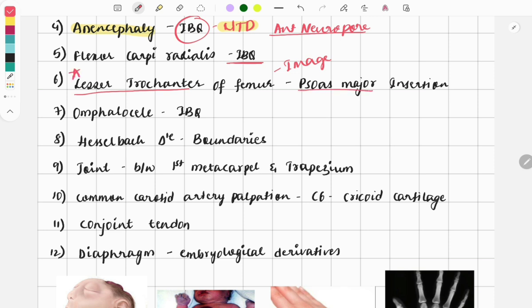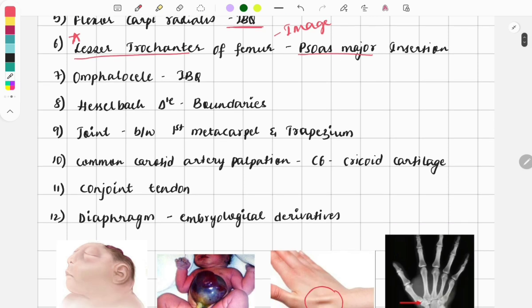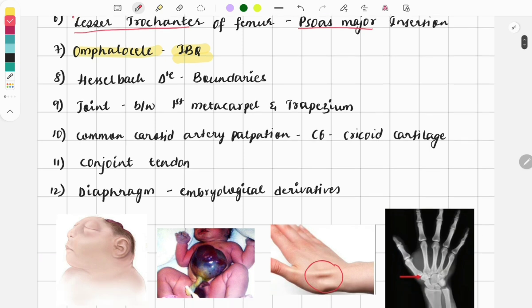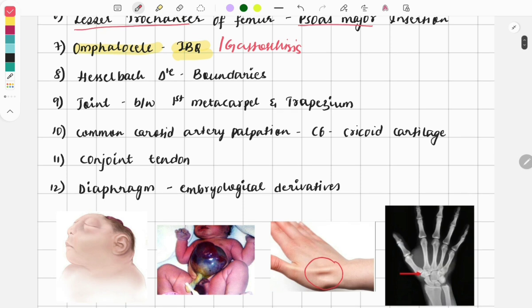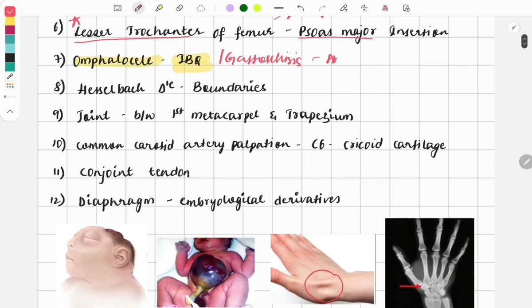The next topic: omphalocele. An image was given and directly asked what is the following. Along with that, gastroschisis is also a very important topic. Omphalocele and gastroschisis—these are abdominal wall defects.